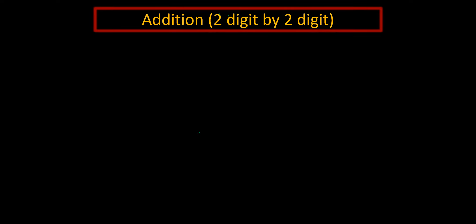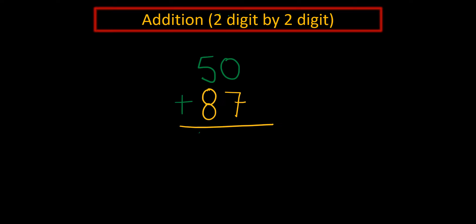Hello and welcome to my class. In this lecture I'd like to talk about addition, two digit by two digit. For example, let's say we have 50 plus 87.